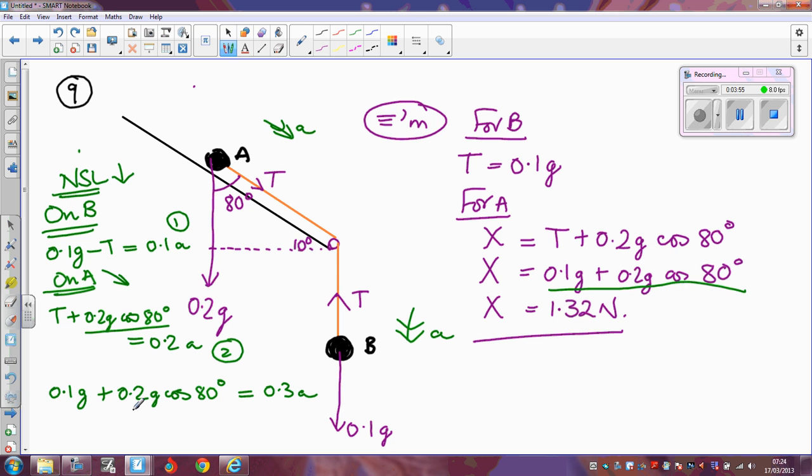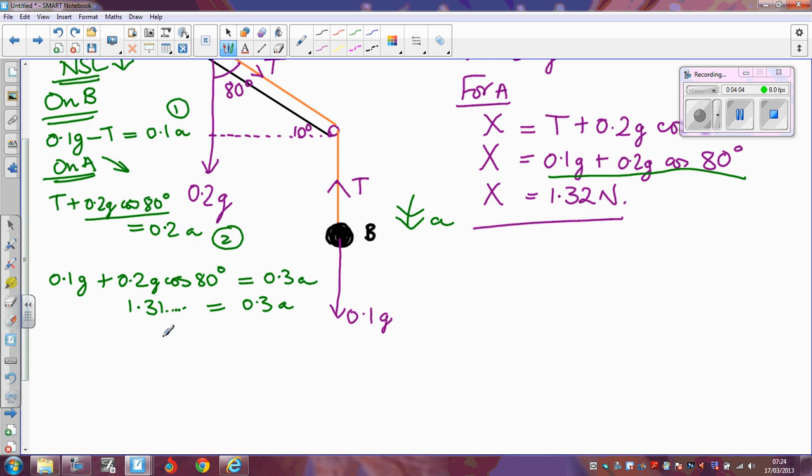Saved it in the memory of my calculator as it wasn't actually 1.32, it was 1.31 blah, blah, blah, blah, blah, and that is equal to 0.3a. So from that, I can find out what A is.